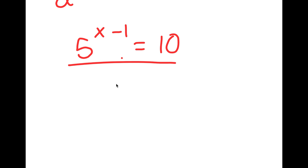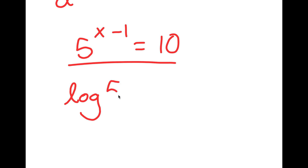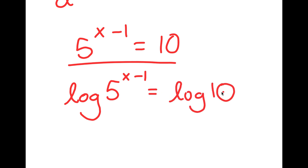So to solve this, what I'm actually going to do is use logarithms. I'm going to start by taking the log on both sides. So I get log of 5 to the power of x minus 1 is equal to log 10.